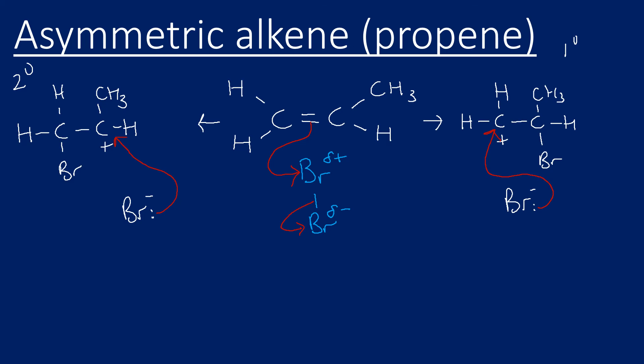So there we go, we've got our dibromo product and they're both exactly the same. It doesn't matter which one or which mechanism we did, we're going to end up with the same product. Bromine on there and a bromine on there. So we don't need to worry about mixtures of products here. Both of them are going to give the same product, so we've got 1,2-dibromopropane.